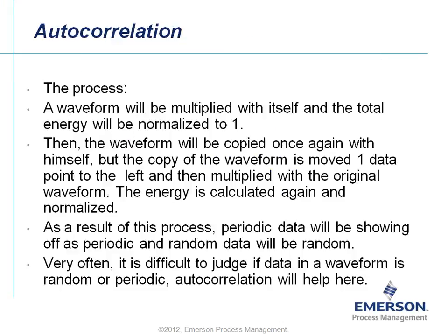Now, what is the process? A waveform will be multiplied with itself and the total energy will be normalized to a value of 1. Then the waveform will be copied once again, but the copy is moved one data point to the left and then multiplied with the original waveform. The energy is calculated again and normalized. As a result, periodic data will show as periodic and random data will remain random.